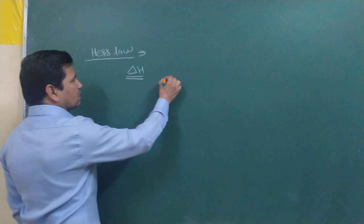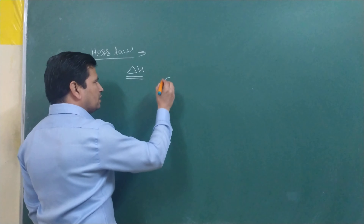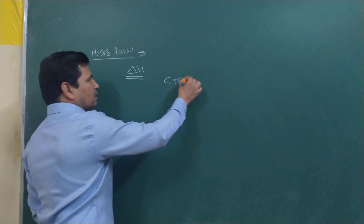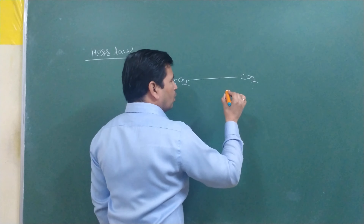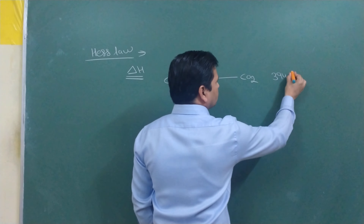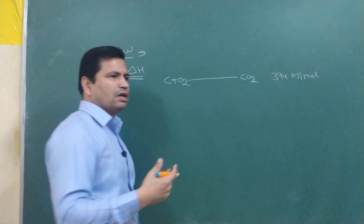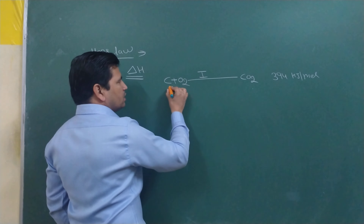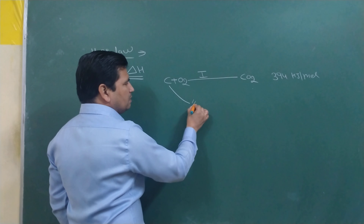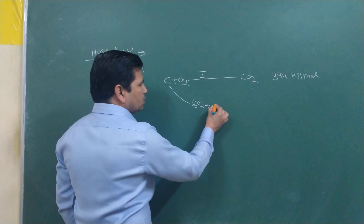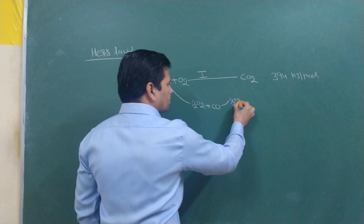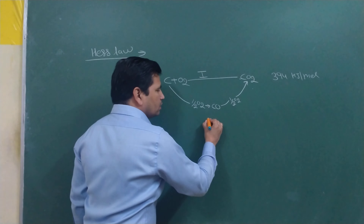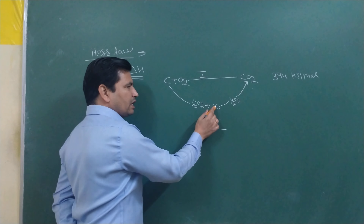To understand this, let's take an example. We want to make carbon dioxide (CO₂). There are two ways to make CO₂. First path: directly from carbon and oxygen. Second path: first carbon reacts with a limited supply of oxygen to form CO (carbon monoxide), and then CO reacts with half O₂ to give CO₂.